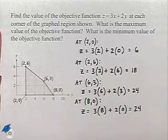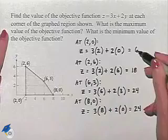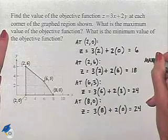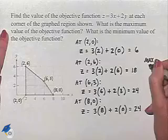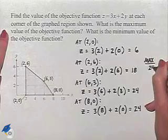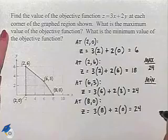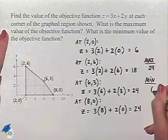Now what's going to be the maximum value? We're simply going to take the largest value that we see, and we can see that in two cases we came up with a value of 24. That's going to be our maximum value. Our minimum value is going to be the smallest value that we came up with, and that is going to be the value of 6.